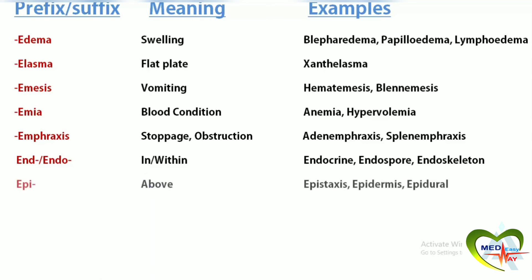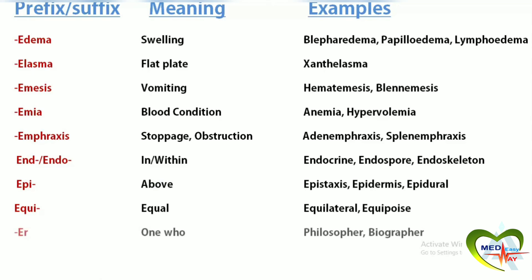Epi means above. Epistaxis is bleeding from the nose. Epidermis is the outer layer of the skin. Epidural is based around the dura mater. Equi means equal. Equilateral means same length on all sides. Equilibrium means balance of forces.